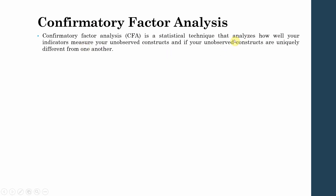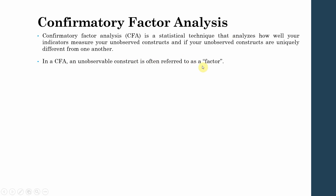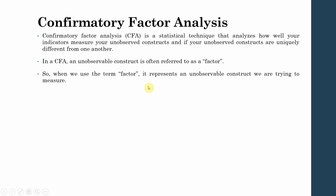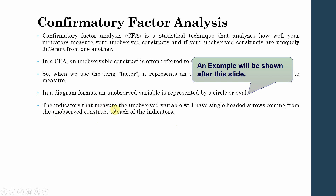CFA analyzes how well your indicators used to measure the unobserved constructs are uniquely different from each other. In CFA, an unobservable construct is often referred to as a factor. So when we use the term factor, it represents the unobservable construct — such as job satisfaction or engagement. In a diagrammatic format, an unobserved variable is represented by a circle or oval, and the indicators have single-headed arrows coming from the unobserved construct to each of the indicators.